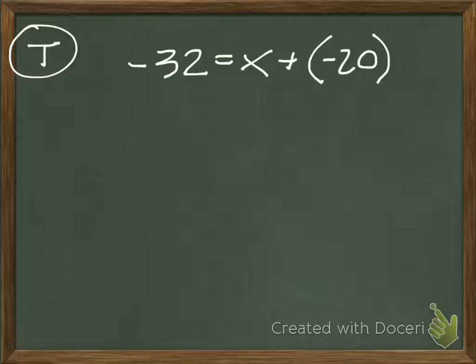And the way that we do that is to try to isolate that variable, meaning we need to get that letter by itself. And we do that by doing what we call inverse operations, or we do the opposite of what some of the numbers are so that we can move them to the other side of the equal sign. So I see this plus a negative 20 on the side with x.